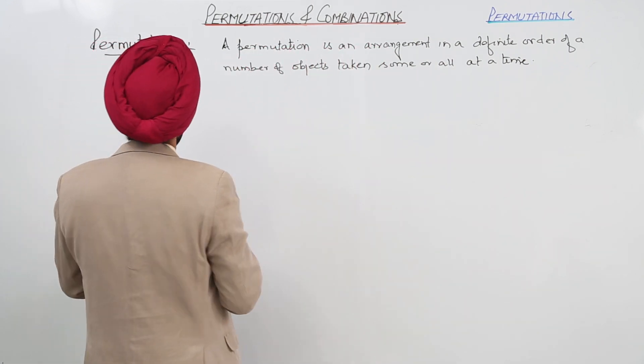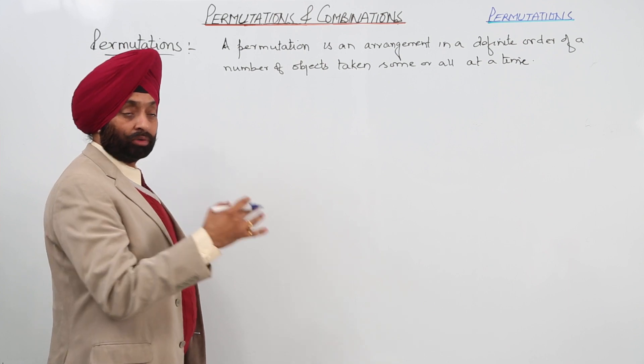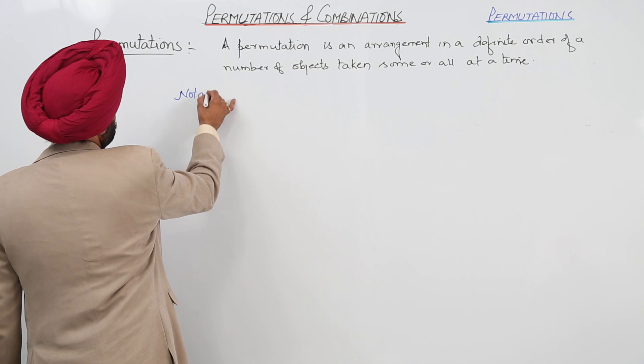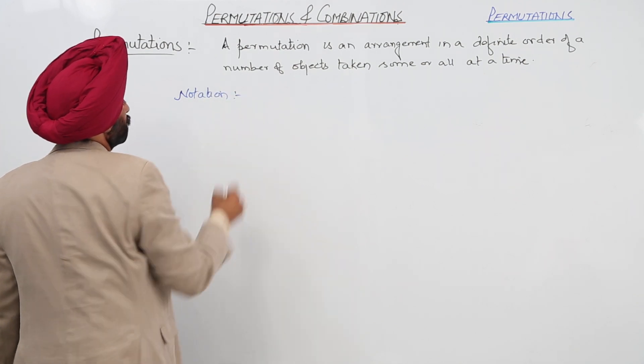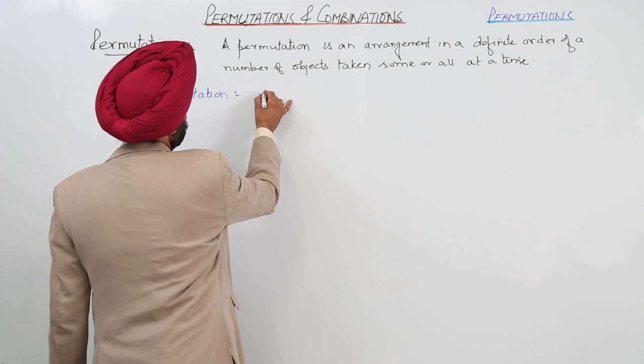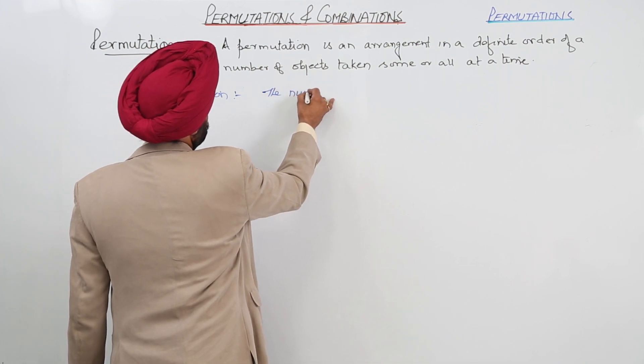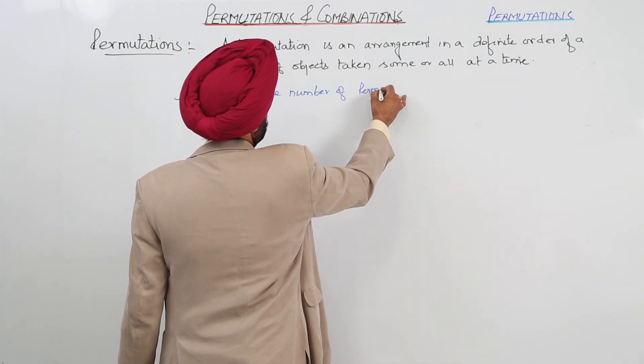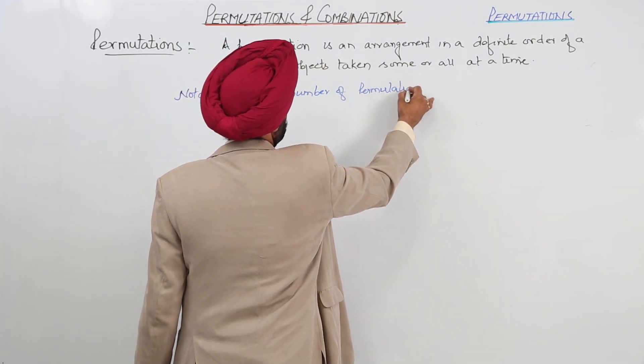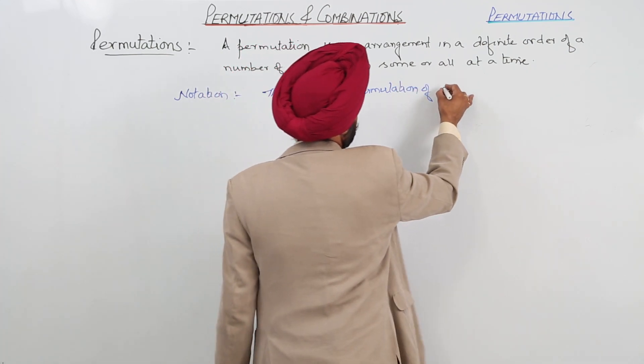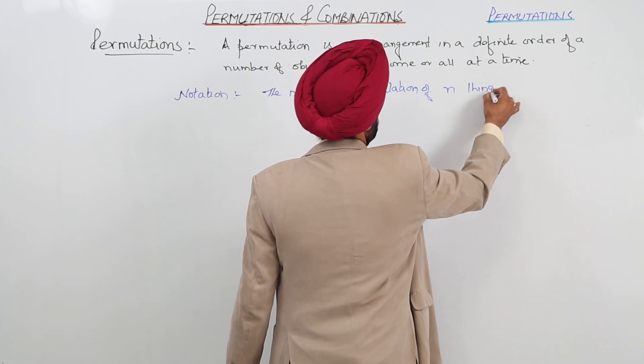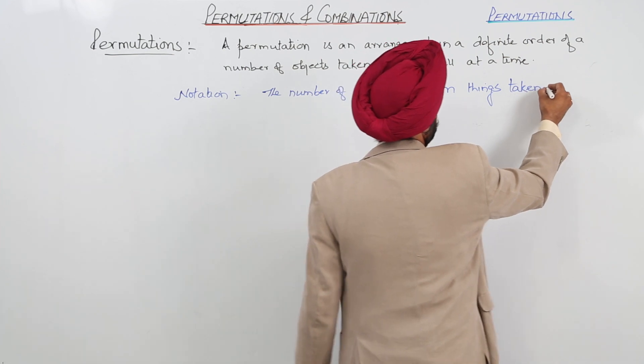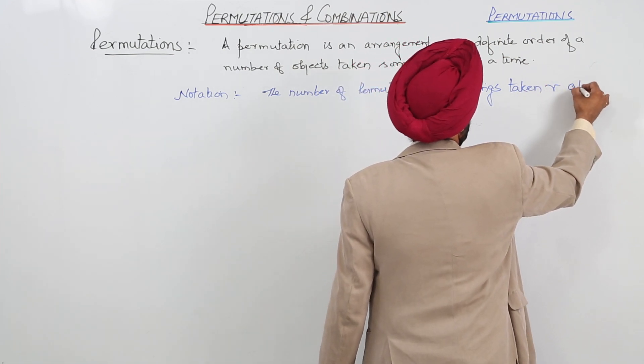Now notation for it. We will be discussing all these things in the theorem also, but before that let me give you a small introduction for this part. Now, the number of permutation of n things taken r at a time.